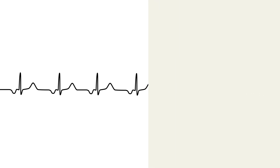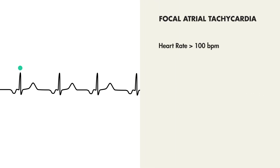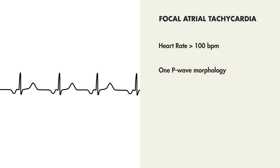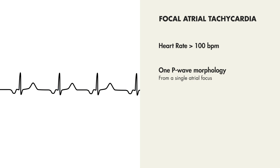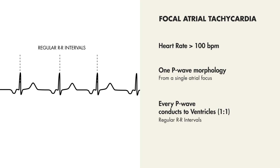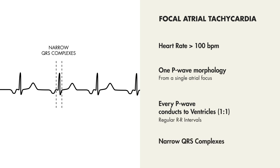So in summary, in a focal atrial tachycardia, heart rate is greater than 100 beats per minute. There is only one P-wave morphology throughout the rhythm, representing only one focus of atrial depolarization. Keep in mind that this P-wave will often appear different morphologically than those seen in normal sinus rhythm. And P-waves conduct one-to-one with QRS complexes, with regular R-to-R intervals and narrow QRS complexes.